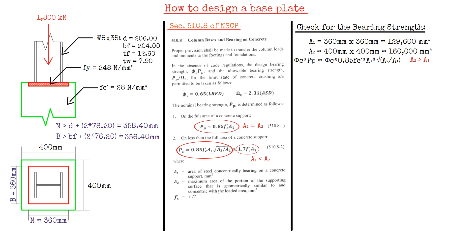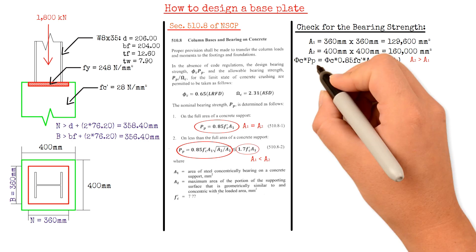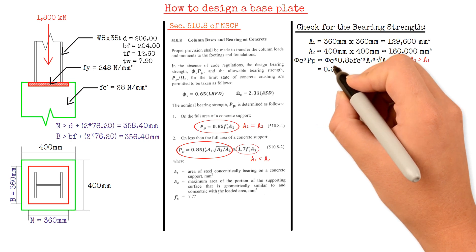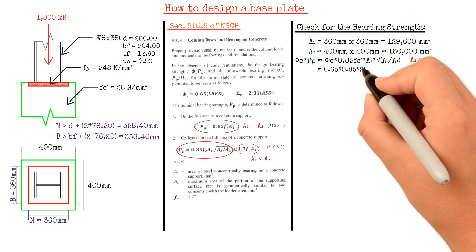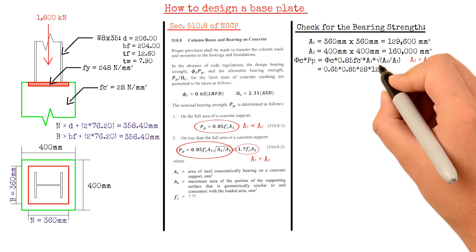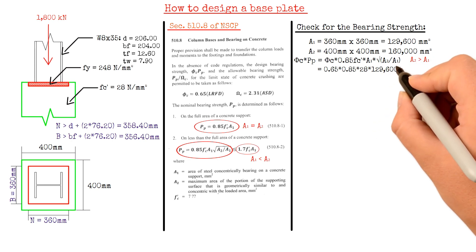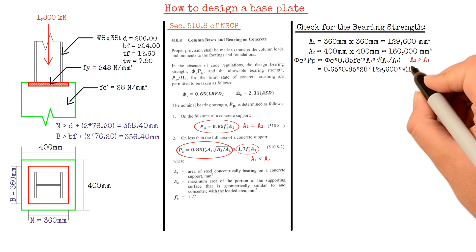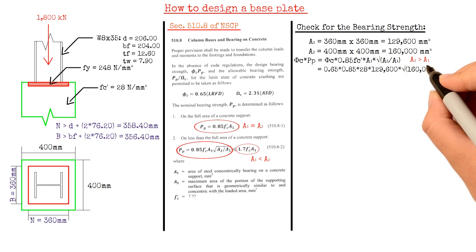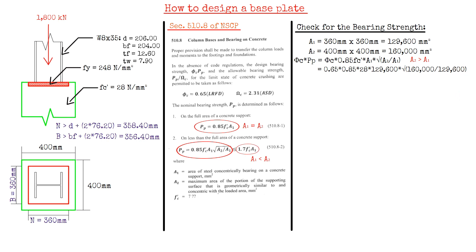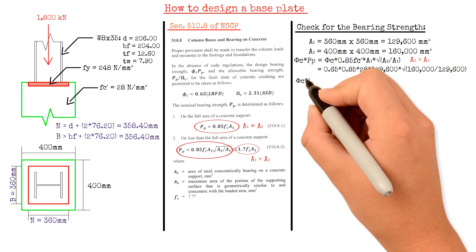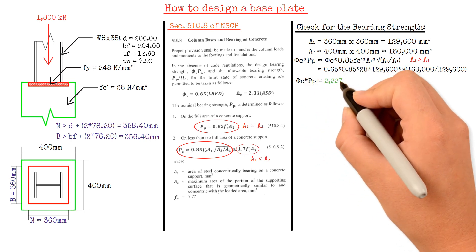Computing the design bearing strength: the reduction factor phi (0.65) times the nominal bearing strength P_P equals 0.65 × 0.85 × 28 N/mm² × 129,600 mm² × √(160,000 mm² / 129,600 mm²). This gives us a value of 2,227.68 kN.